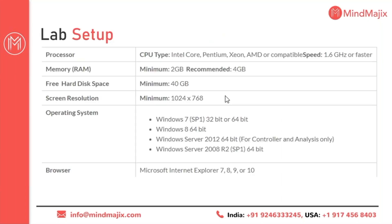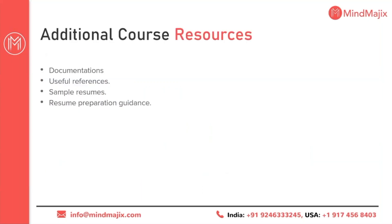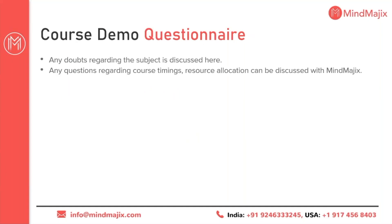For lab setup, LoadRunner requires Windows — all components support Windows, but some do not support Linux or Mac OS. System specifications: minimum 2 GB RAM (4 GB recommended), minimum 40 GB hard disk space, and it supports all flavors of Windows. It also supports Internet Explorer in all versions as well as Chrome and Firefox. Additional course resources include documents, useful references, sample testing, and testing preparation guidance.